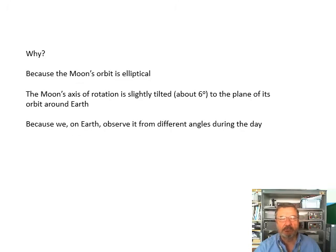Because the Moon's orbit is elliptical - it's not circular - sometimes the Moon is closer to the Earth so it looks bigger, sometimes it's further away. The Moon's axis of rotation is slightly tilted by about six degrees, so the orbit, the plane of orbit of the Moon, is slightly tilted to the Earth.